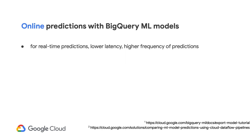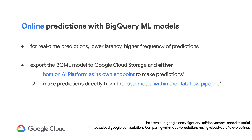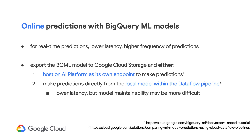That's where online prediction comes in — for real-time predictions in low-latency situations with higher frequencies of predictions. To do online predictions, you will need to export and host the BigQuery ML model on AI Platform. Another option is to export the model to Google Cloud Storage and serve it directly in a Dataflow pipeline, which may help optimize for lower average latency but can make model maintainability more difficult. In this design pattern, we'll show how the model is hosted as its own endpoint on AI Platform for online predictions.